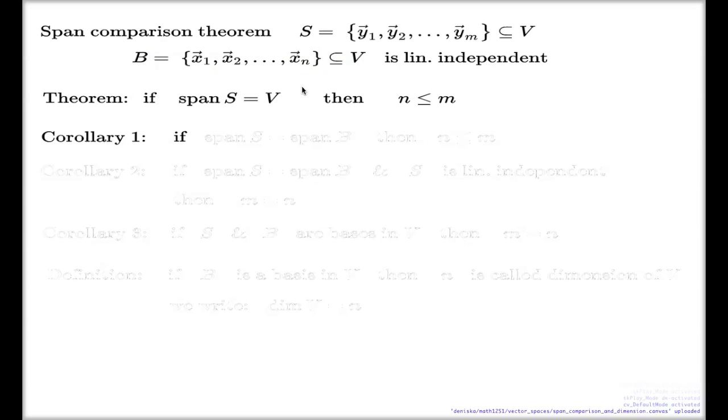If S and B, if they span the same amount of vectors, if the spans are identical to each other, again, the same conclusion is true. So if you require, rather than this, if you have the span of S equals span of B, then again...